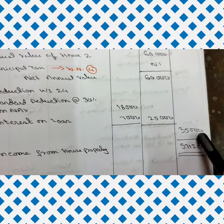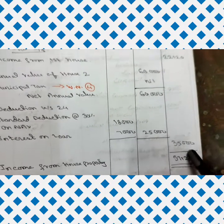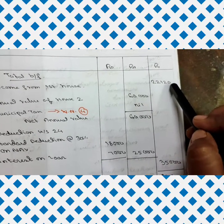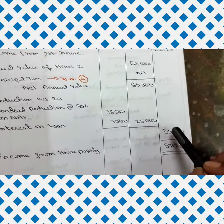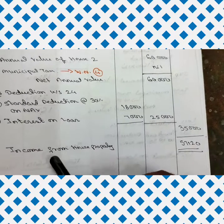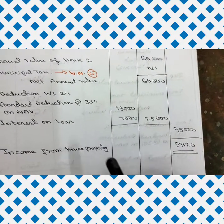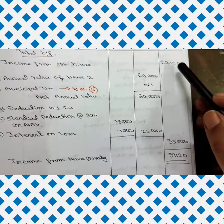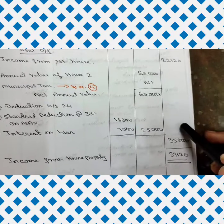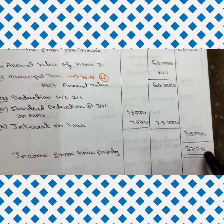Deducting 25,000 from NAV of 60,000, income from the second house is 35,000. Income from house one is 22,120 and from house two is 35,000. Total income from house property of Mrs. Seema Agarwal is 57,120.